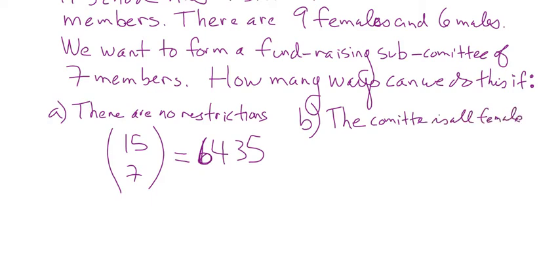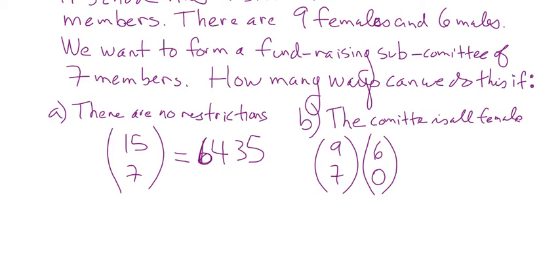Part B: the committee is all-female. There are nine females — I need seven of them. There are six males — I need none. So it's 9C7 × 6C0. Six choose zero is just one, so we only need to calculate 9 choose 7, which is 36. Thirty-six of those committees would be all-female.